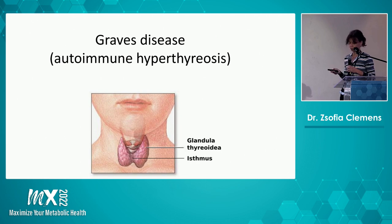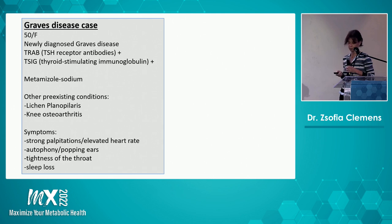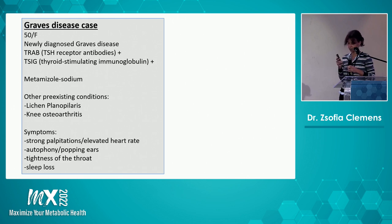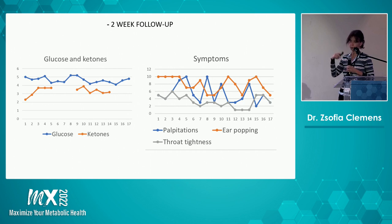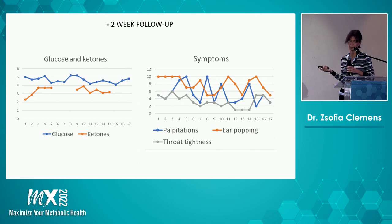The opposite disease — autoimmune hyperthyreosis — is Graves disease. This was a newly diagnosed Graves disease patient with high Graves-related antibodies, immediately started on methimazole sodium. This patient also had other autoimmune conditions. Symptoms included strong palpitations, elevated heart rate, autophony, popping of the ears, tightness of the throat, sleep loss, and anxiety. During the two-week follow-up, ketones elevated into the target range and glucose remained relatively low. There was some fluctuation in symptoms but overall a decrease. With Graves disease, two weeks is not enough — recovery takes a much longer time compared to autoimmune hypothyreosis, so a longer follow-up and many more blood works are needed.